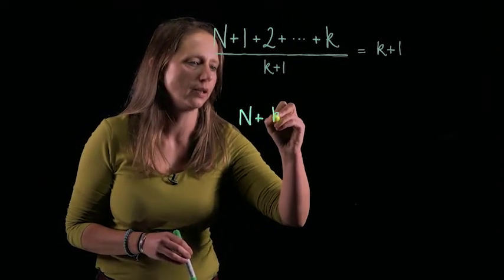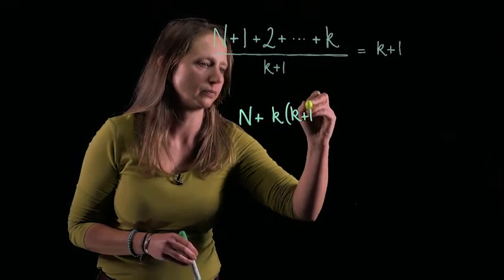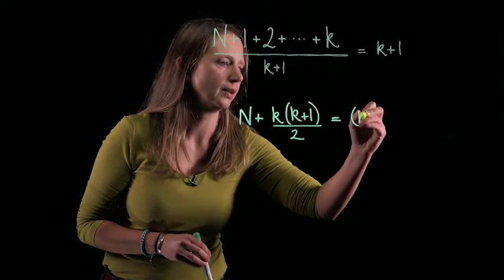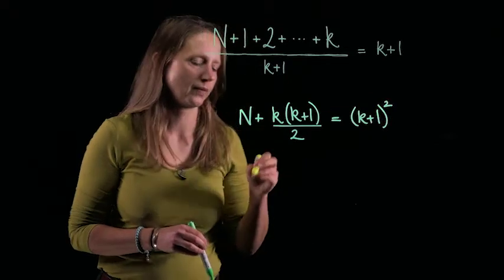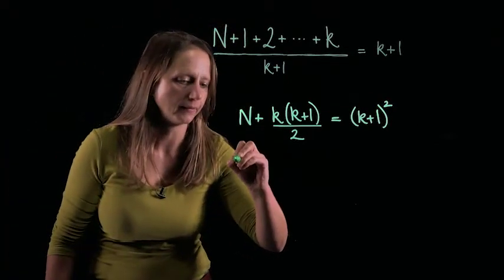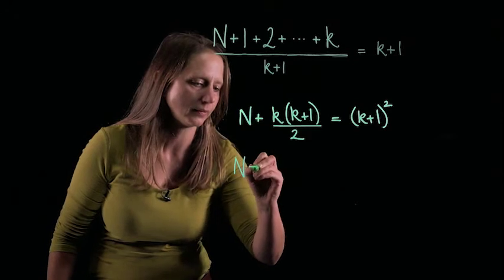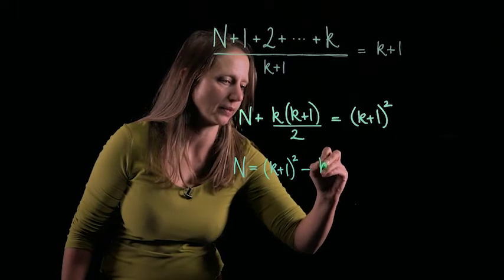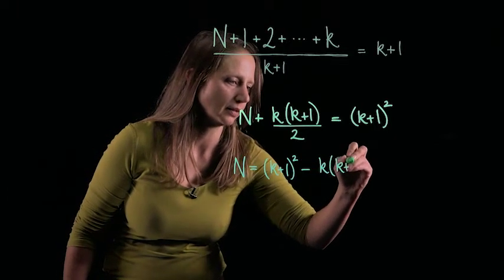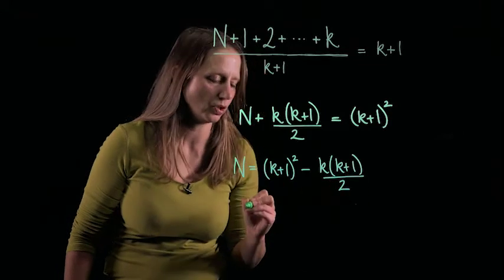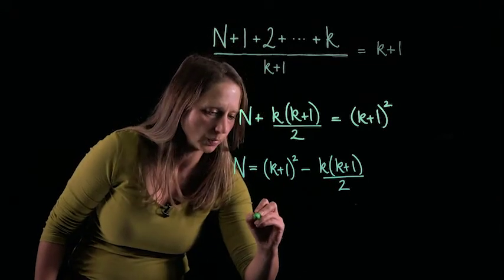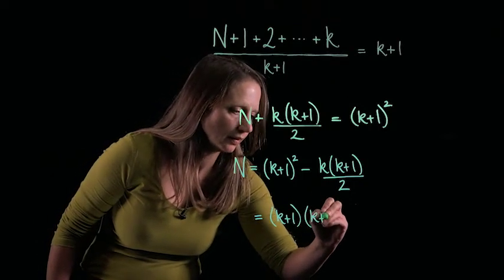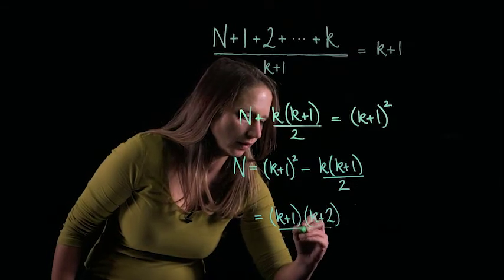So we've got n plus the sum of these consecutive integers. So we've got the kth triangular number. And I'll multiply through by k plus 1 to get k plus 1 squared here. And we can rearrange this to look at n. So n is equal to k plus 1 squared minus k times k plus 1 over 2. We can do a little bit of algebra. I'll leave you to do some work there and end up with k plus 1 times k plus 2 over 2.